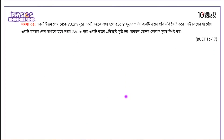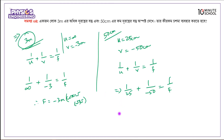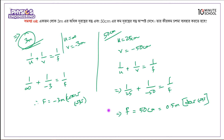Let me redo the calculation. We can take f equals 50 centimeters, which is 0.5 meters — a positive value — confirming a converging lens. This suggests we need bifocal lenses: f1 (distance correction) equals minus 3 meters, and f2 (near correction) equals 0.5 meters.